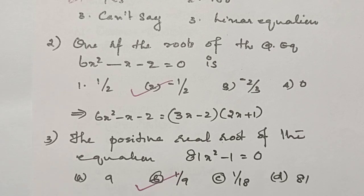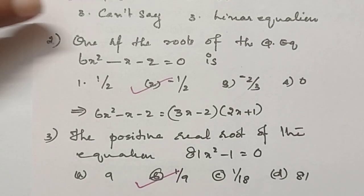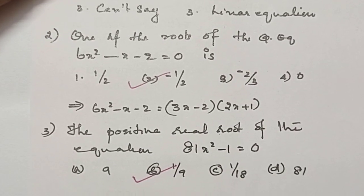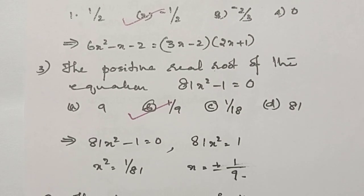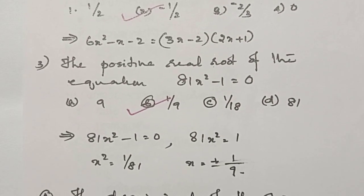The positive real root of the quadratic equation 81x squared minus 1 equals 0 is? In the question, it is asked for a positive real root. Therefore, the answer is 1 by 9.